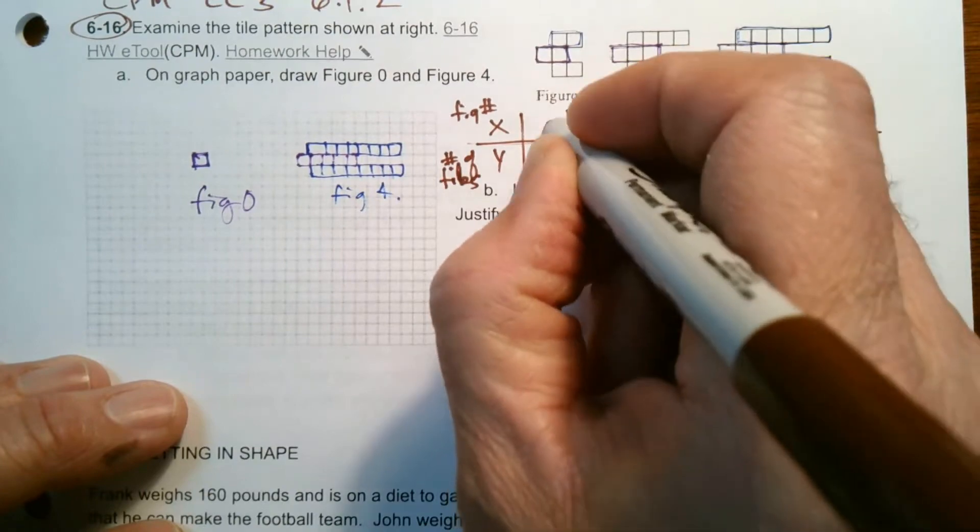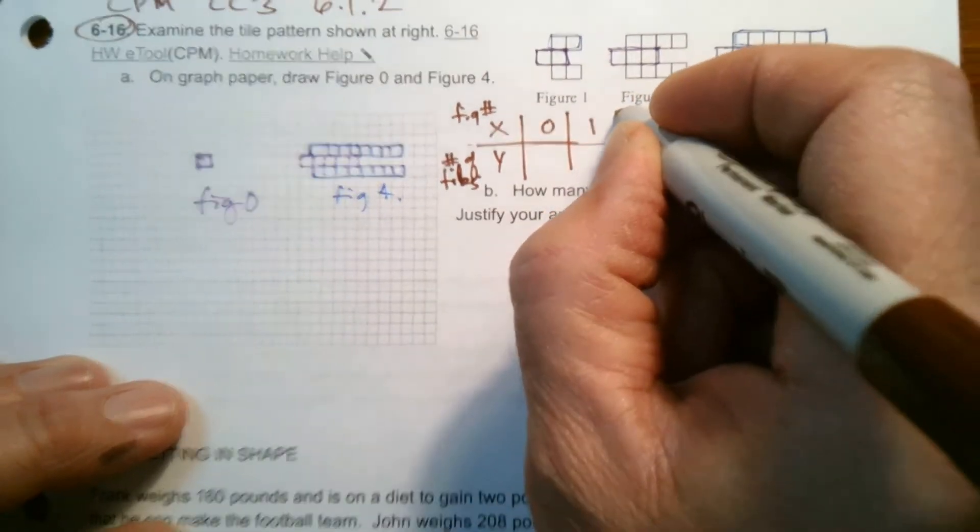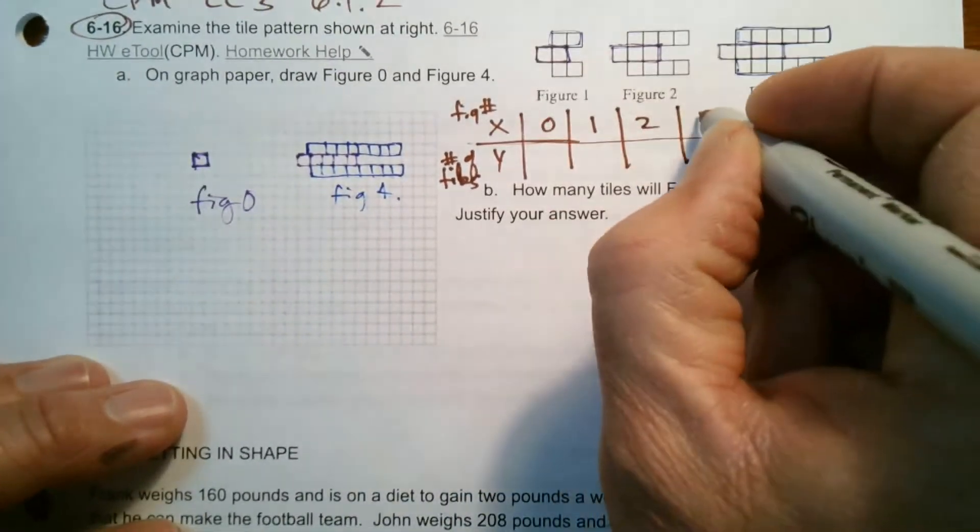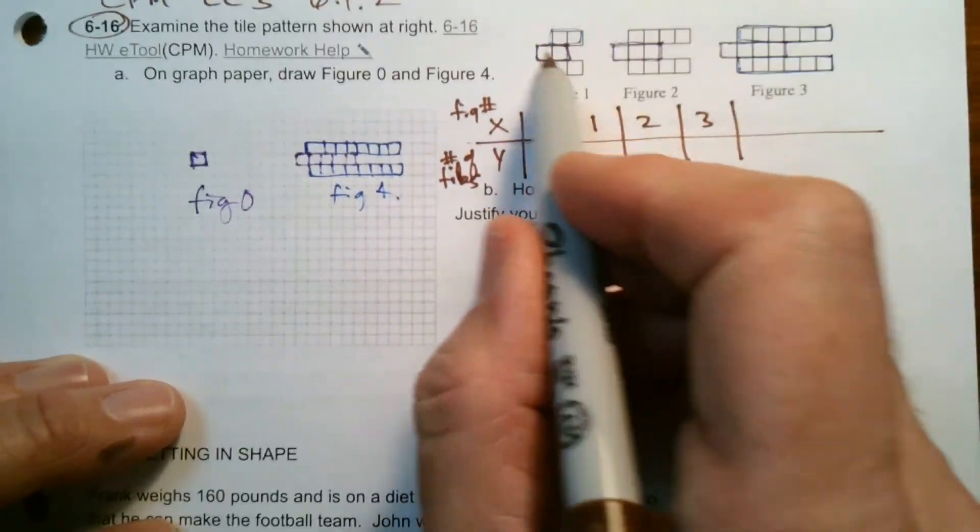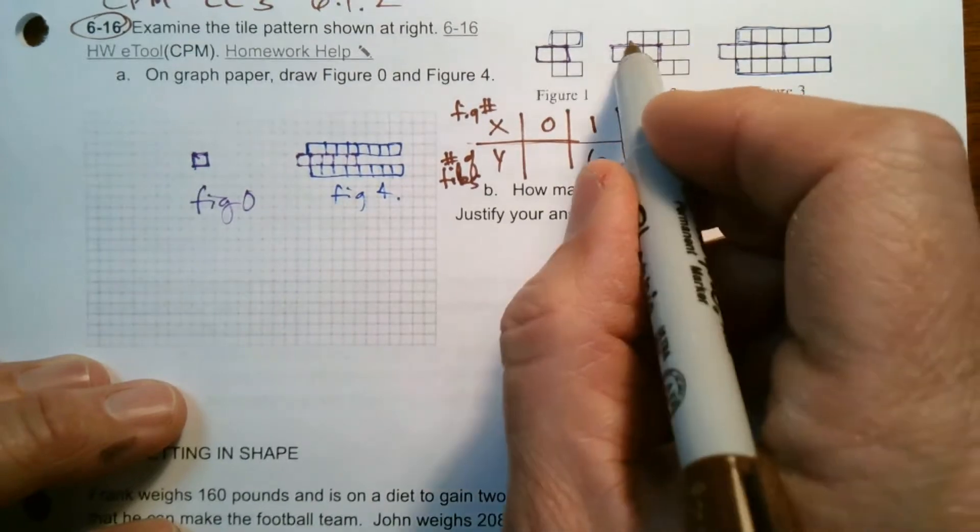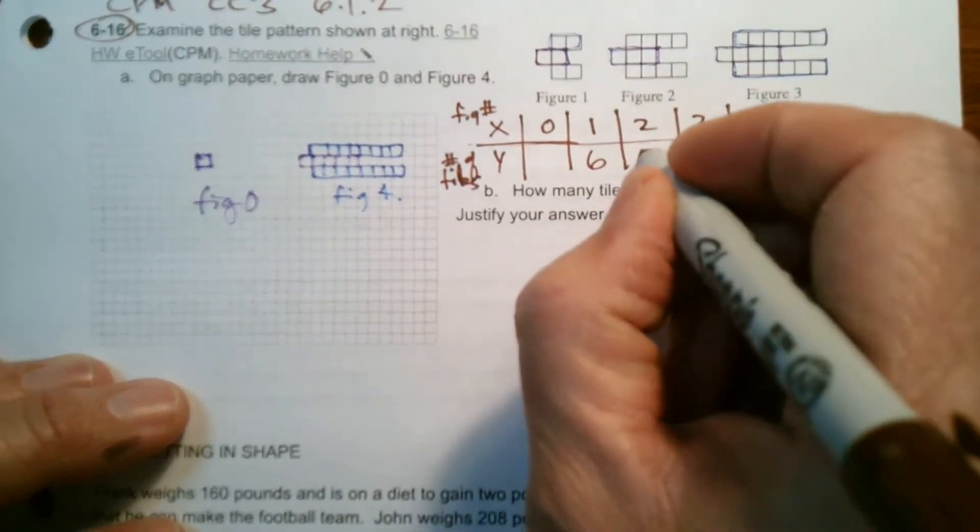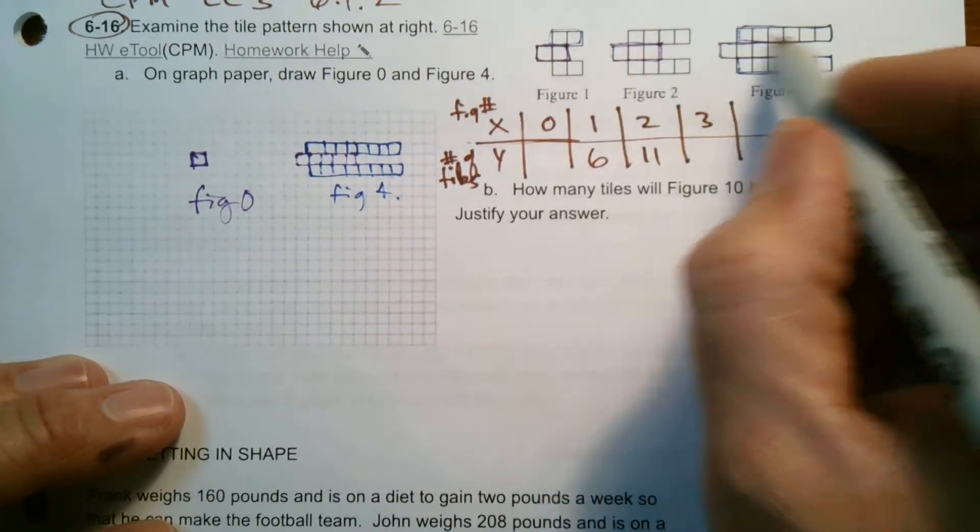Figure 1, we'll start with what we had so I can show you the pattern. Figure 1, if I count that, there was 6. Figure 2, if I count it, I have 4, 3, and 4, which is 11. Figure 3 is 6, 4, and 6, which is 16.